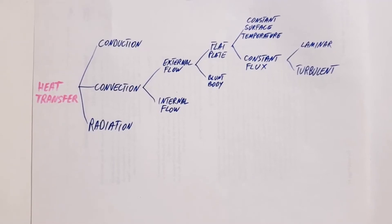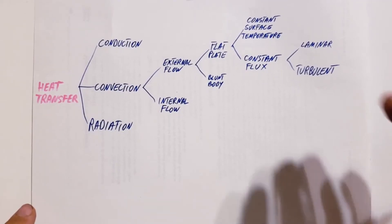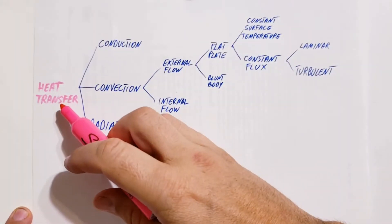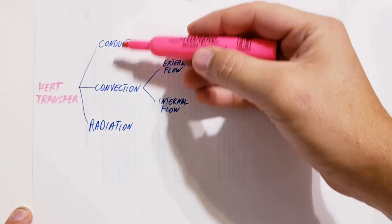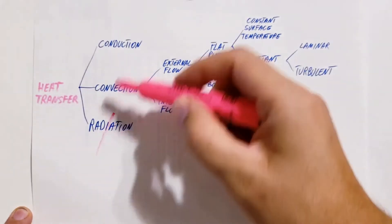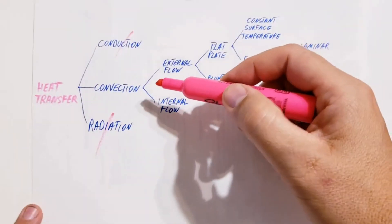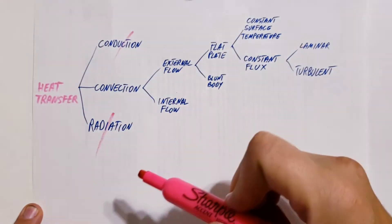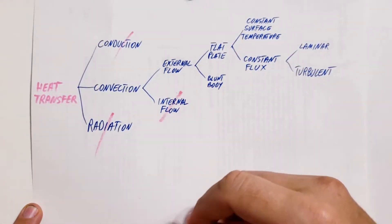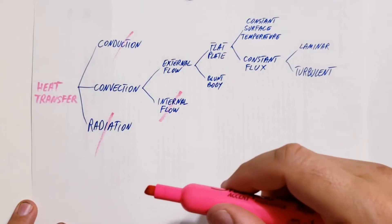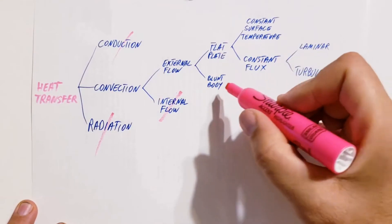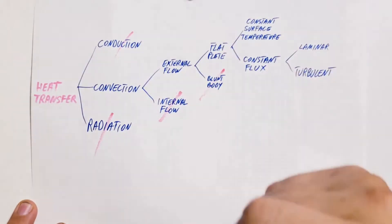Let's think through what kind of situation we're dealing with to find the correct formulas. In heat transfer we have three scenarios: conduction, convection, and radiation. We don't have radiation or conduction — we are dealing with convection. We are not inside a pipe or duct, so it's not internal flow, it's external flow. We are considering the chip as a flat plate, not a blunt body.